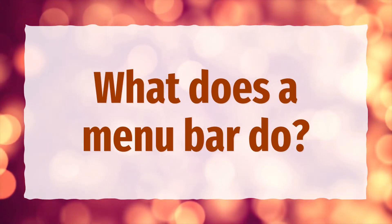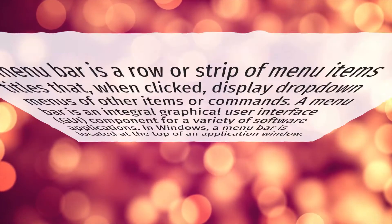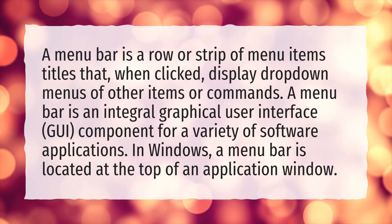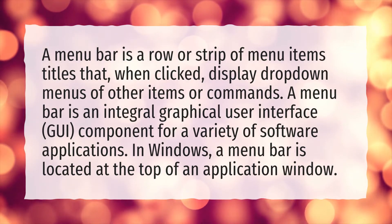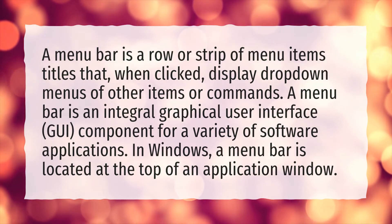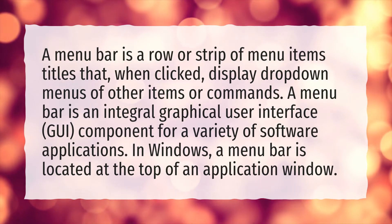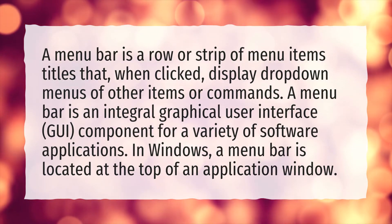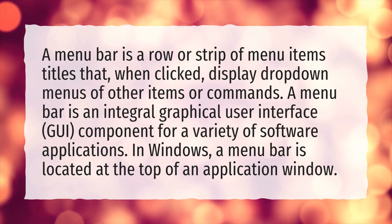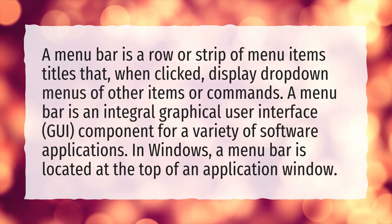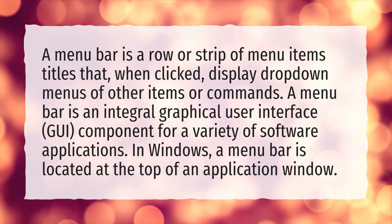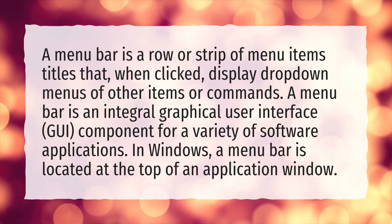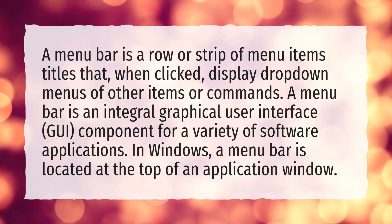What does a menu bar do? A menu bar is a row or strip of menu item titles that, when clicked, display drop-down menus of other items or commands. A menu bar is an integral graphical user interface (GUI) component for a variety of software applications. In Windows, a menu bar is located at the top of an application window.